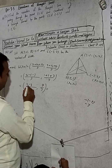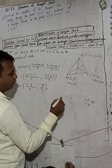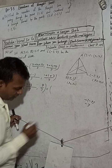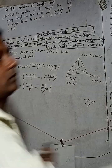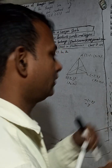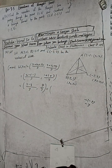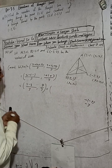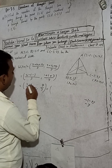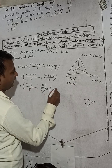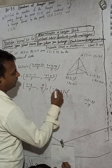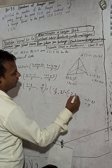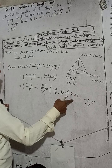So the x-coordinate is 2 + (-5) + (-3) = 2 - 5 - 3 = -6, divided by 3 = -2. The y-coordinate is 1 + 1 + 7 = 9, divided by 3 = 3. So the centroid G = (-2, 3).